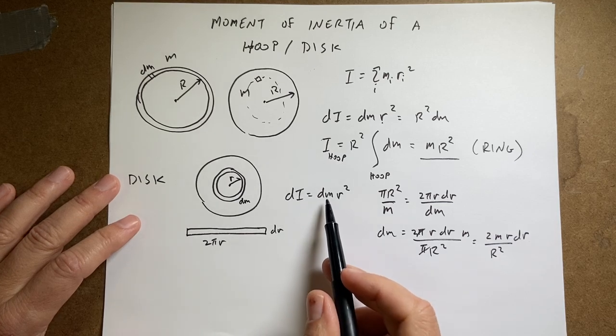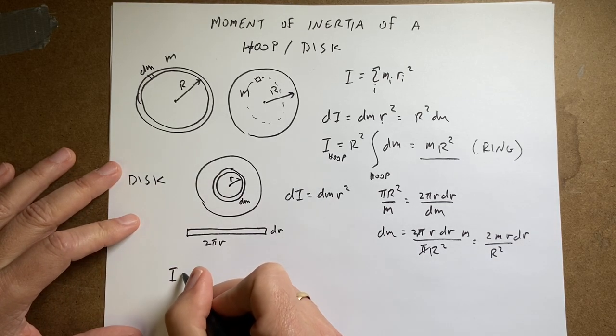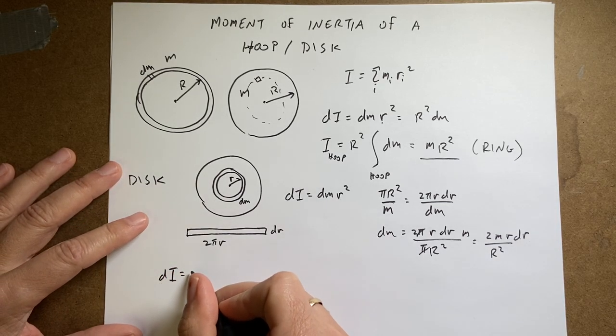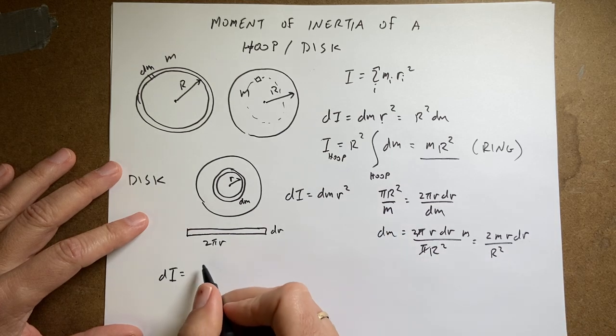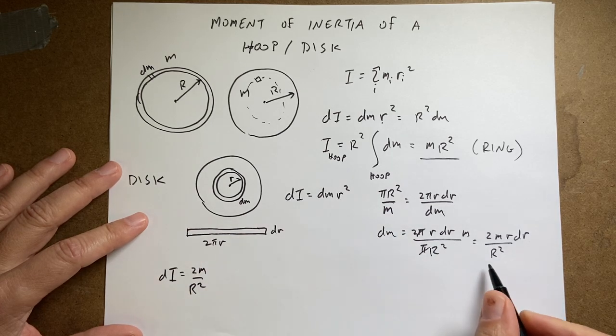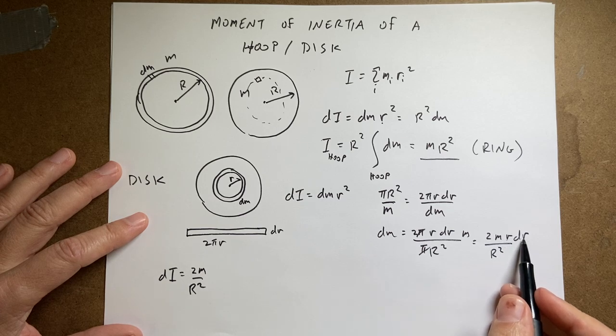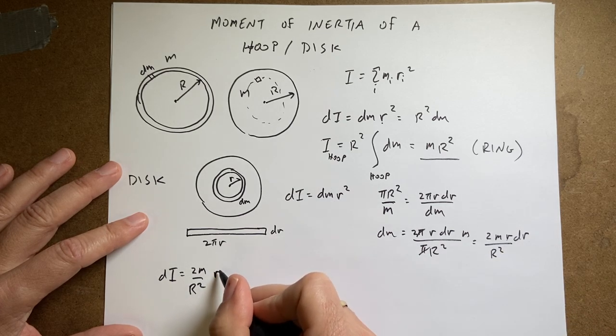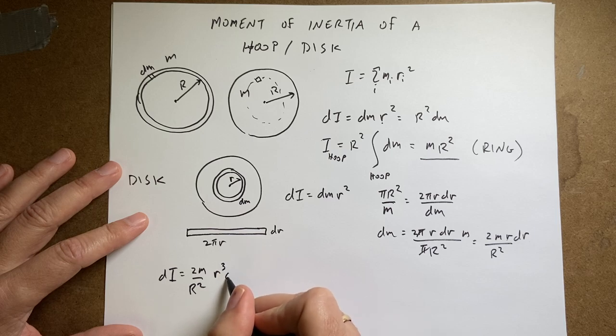So now I can put that in up here and I get dI is the integral of dm r squared. So it's going to be 2m over R squared. Then I have an r dr times r squared. So it's going to be r cubed dr.